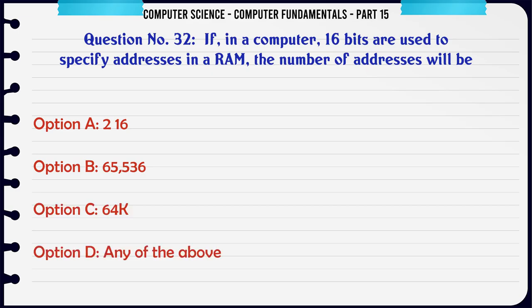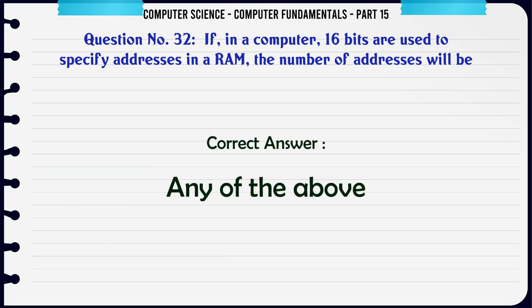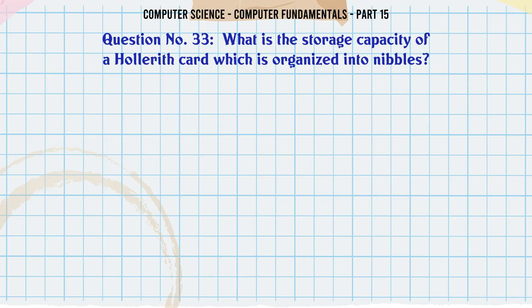If in a computer 16 bits are used to specify addresses in a RAM, the number of addresses will be: A. 2^16 B. 65,536 C. 64K D. Any of the above. The correct answer is Any of the above.